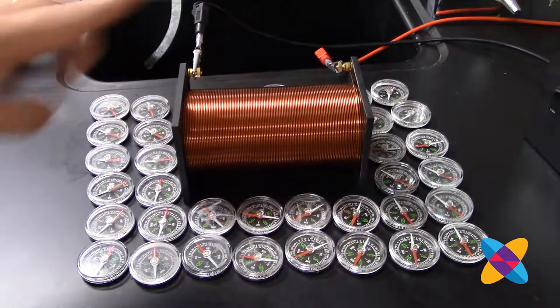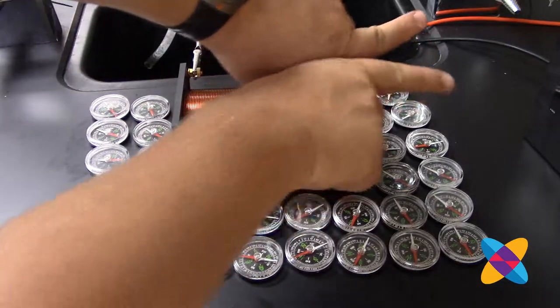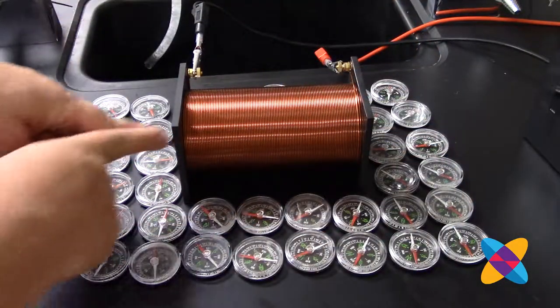So in the solenoid, the magnetic field points to the right, and then the magnetic field comes out, circles around, and goes in again.